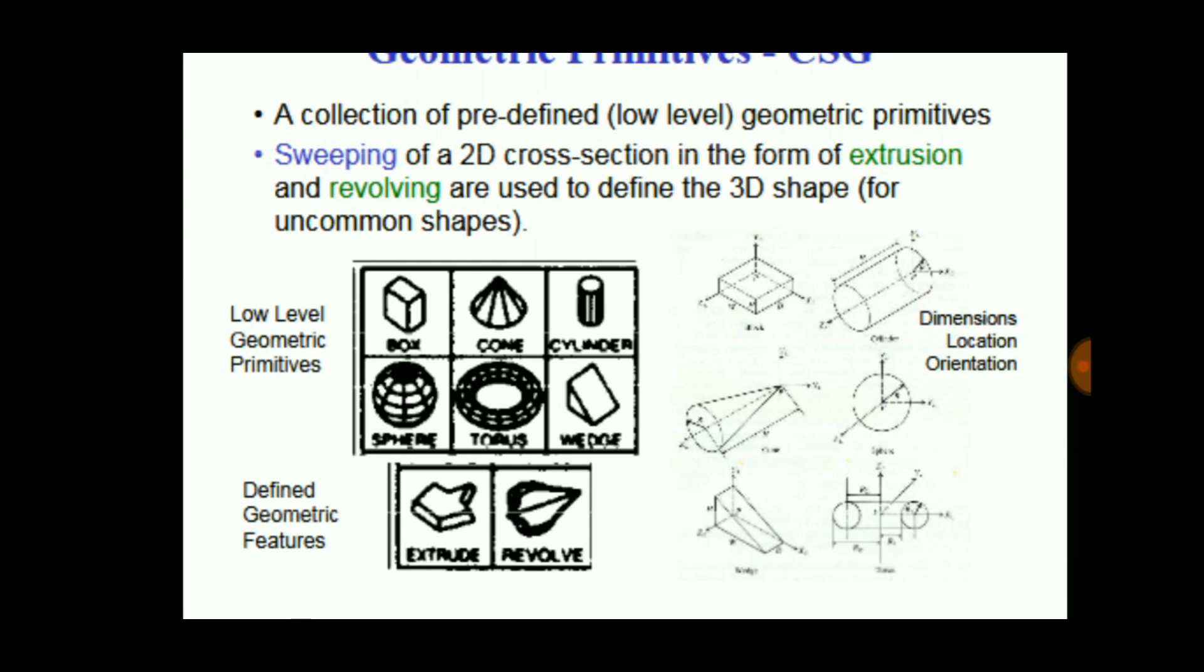We can drag the object from the top and build the product. The simple shapes are called low-level geometric primitives, such as cone shape, box, cylinder, etc.